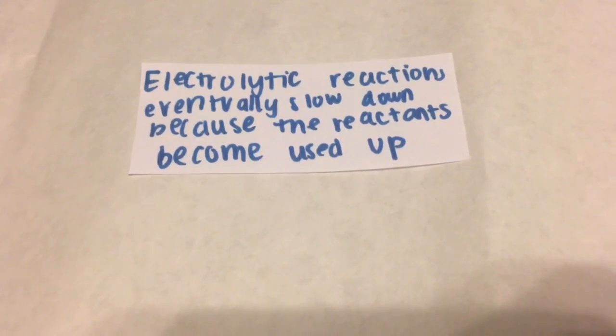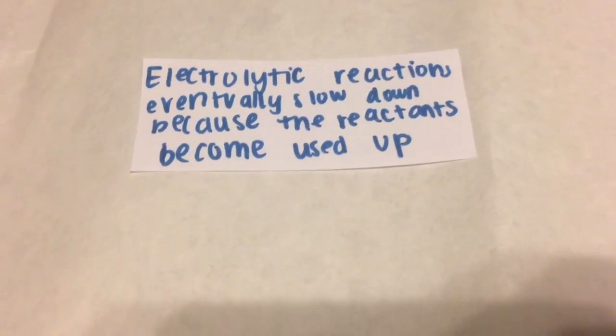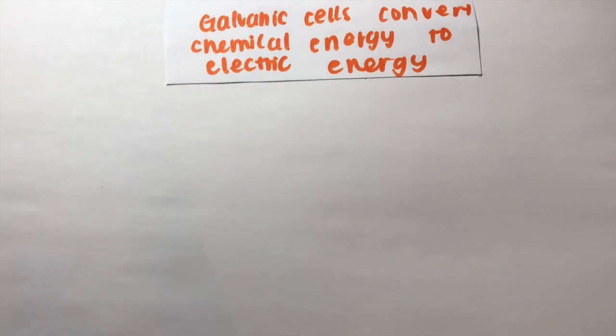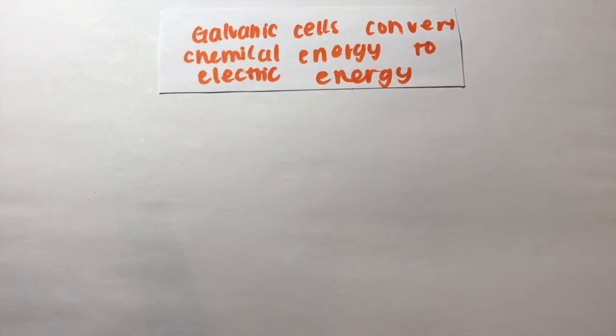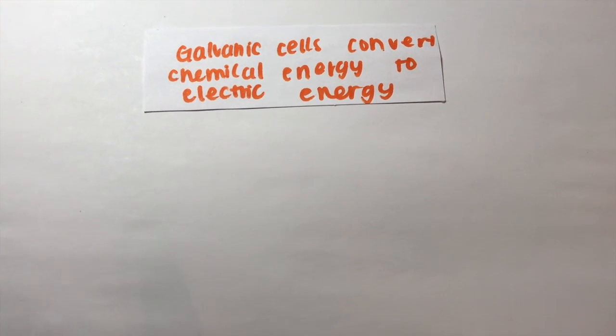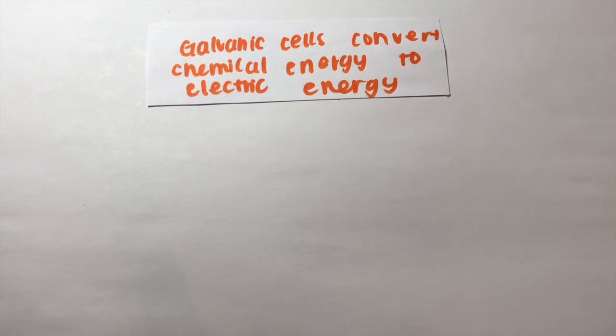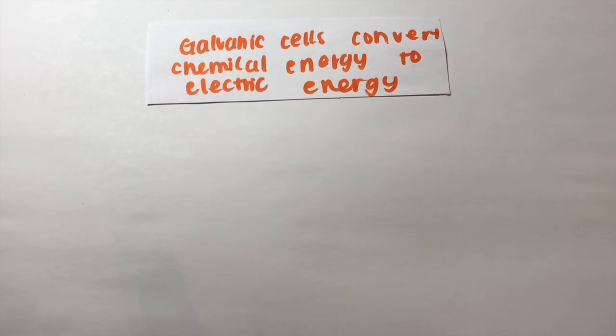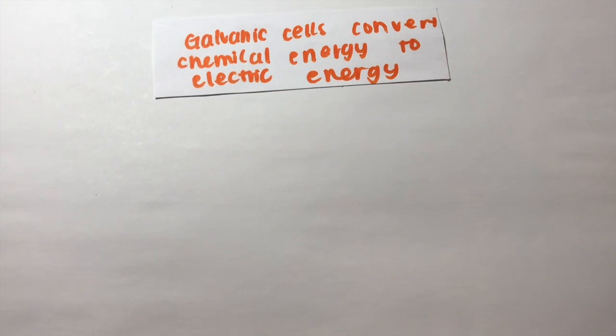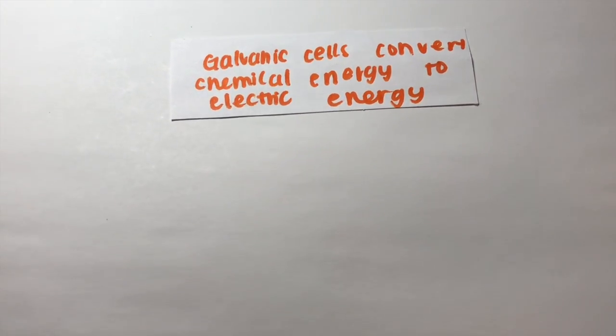Electrolytic reactions eventually slow down because the reactants become used up. Galvanic cells have many uses also. However, they function a little differently than electrolytic cells. Galvanic cells work to convert chemical energy to electrical energy. This helps them power many devices like phones and radios.